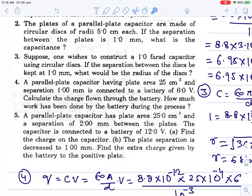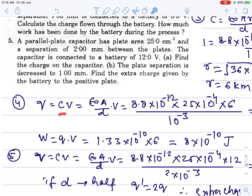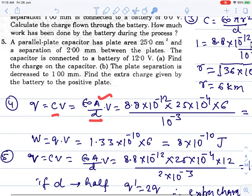Next question: A parallel-plate capacitor having plate area 25 cm² and separation 1.00 mm is connected to a battery of 6.0 volts. Calculate the charge flown through the battery and how much work has been done by the battery. First find C = ε₀A/d. Put the values in SI units. Then Q = CV. Work done W = Q × V. Direct question—you just have to remember the formula and put values in SI units.